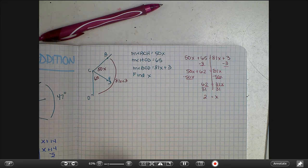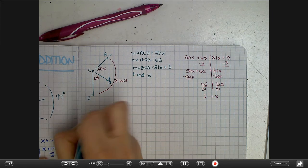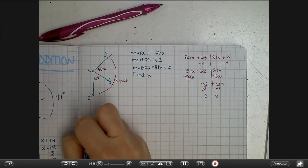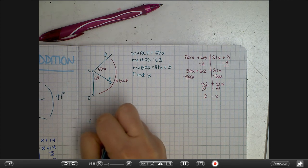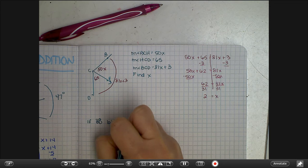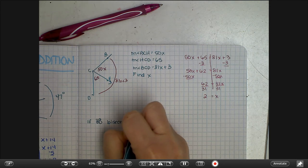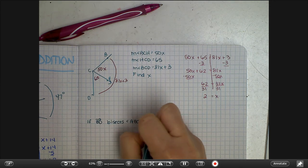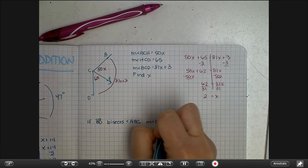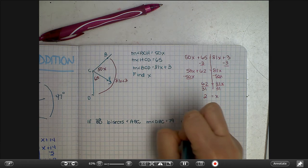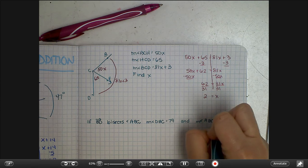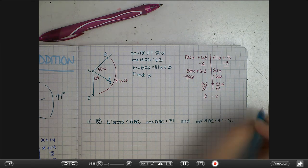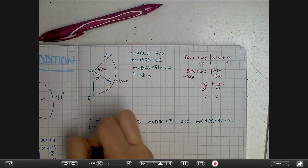So I'm going to write one down for you. If BD bisects angle ABC, the measure of angle DBC is 79, and the measure of angle ABC is 9x minus 4, find x.